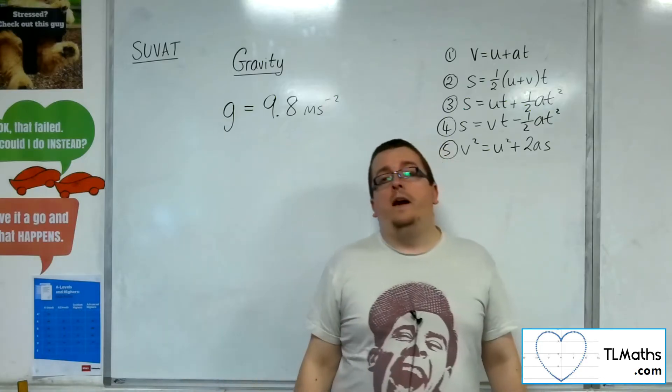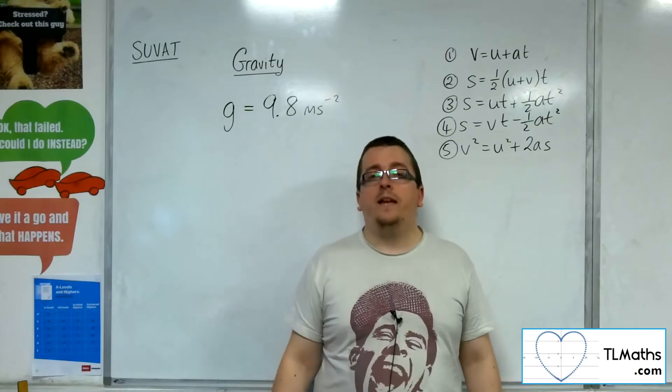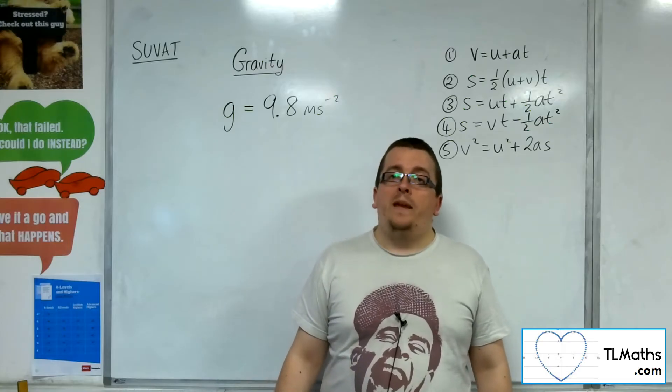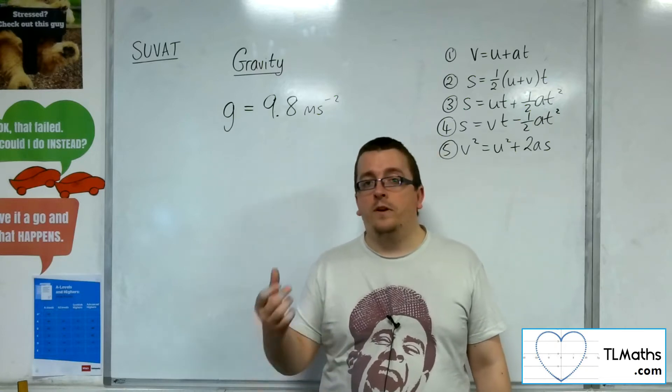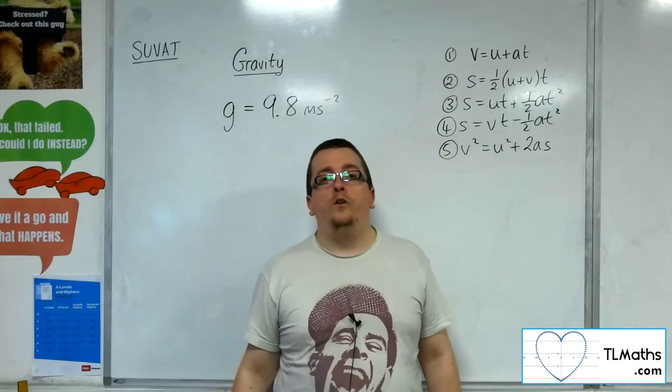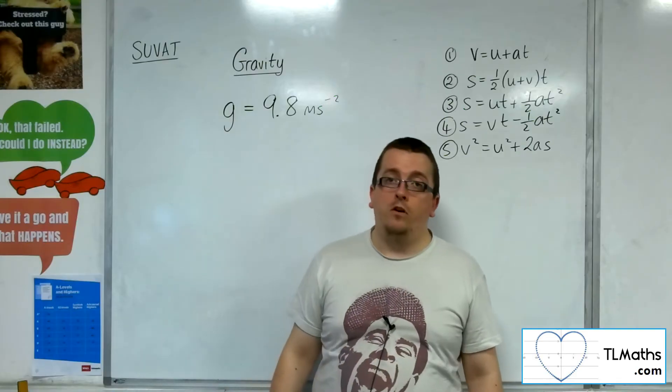If you're on the Moon, that G would be different. It would be less than the 9.8 metres per second per second. That's why when you see people who've been on the Moon, they're kind of bouncing around because gravity is not so strong.